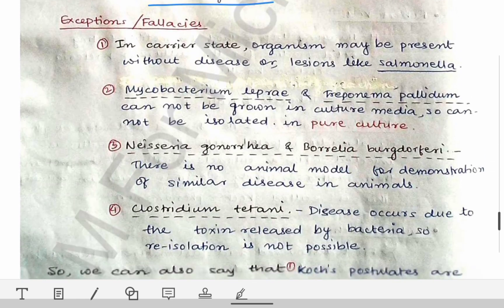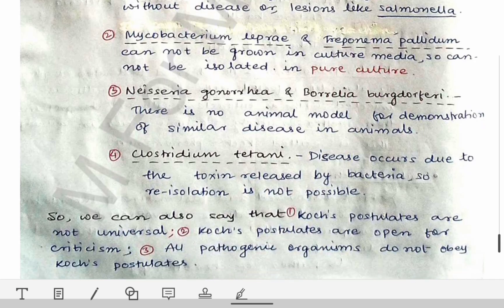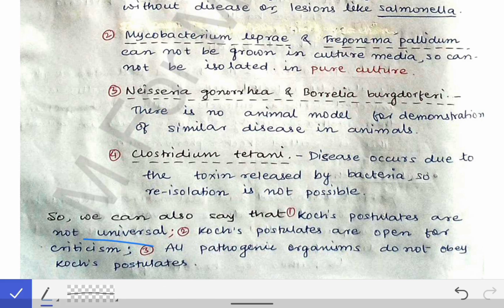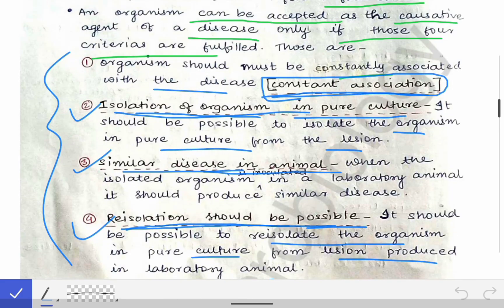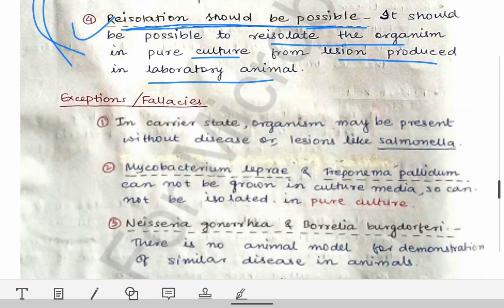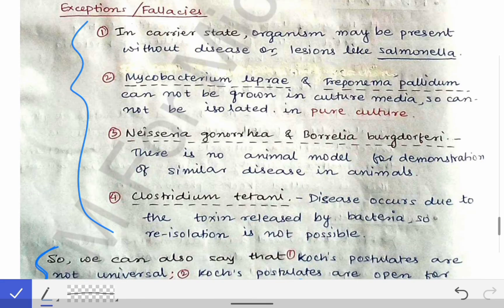Next are the exceptions or fallacies of Koch's Postulates. These are frequently asked — either directly about the fallacies, or as 'explain why' questions such as 'why are Koch's Postulates not universal,' 'Koch's Postulates are open for criticism — explain why,' or 'all pathogenic organisms do not obey Koch's Postulates — explain why.' For all these questions, you should first write the four Koch's Postulates and then describe the fallacies. Then your answer will be complete and you will get full marks.